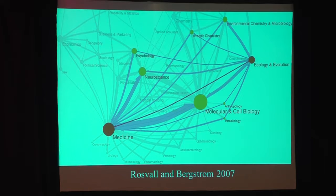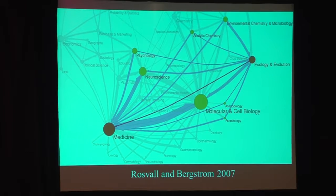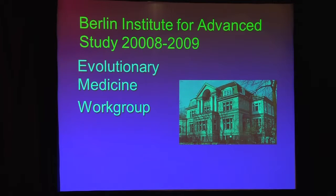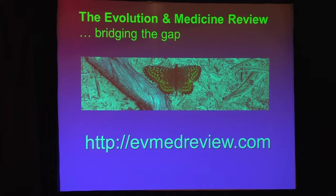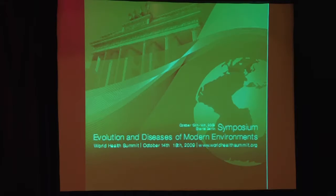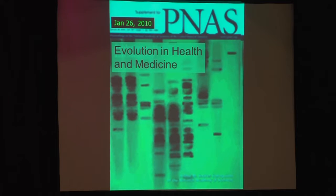This is a connection diagram showing citations. The important thing is that here's medicine and here's evolution — this line didn't exist 15 years ago at all, but new connections are coming. A group of us were invited to the Berlin Institute of Advanced Study to spend the year together trying to advance evolutionary applications in medicine. One of the main things we came up with is creating an online journal called the Evolution Medicine Review — just type that into Google and you'll find it. It also made it possible for us to organize a meeting of 80 leading scientists who study exactly how modern environments cause disease.